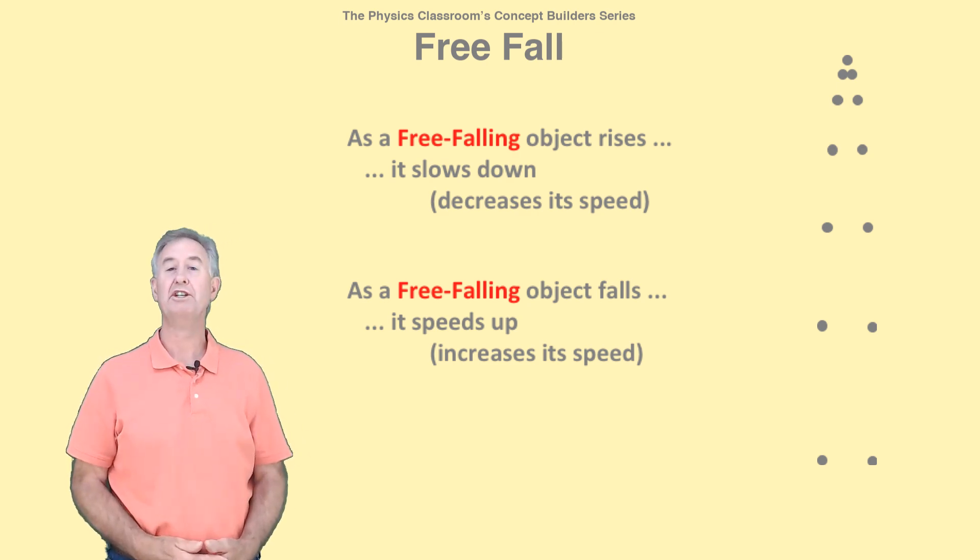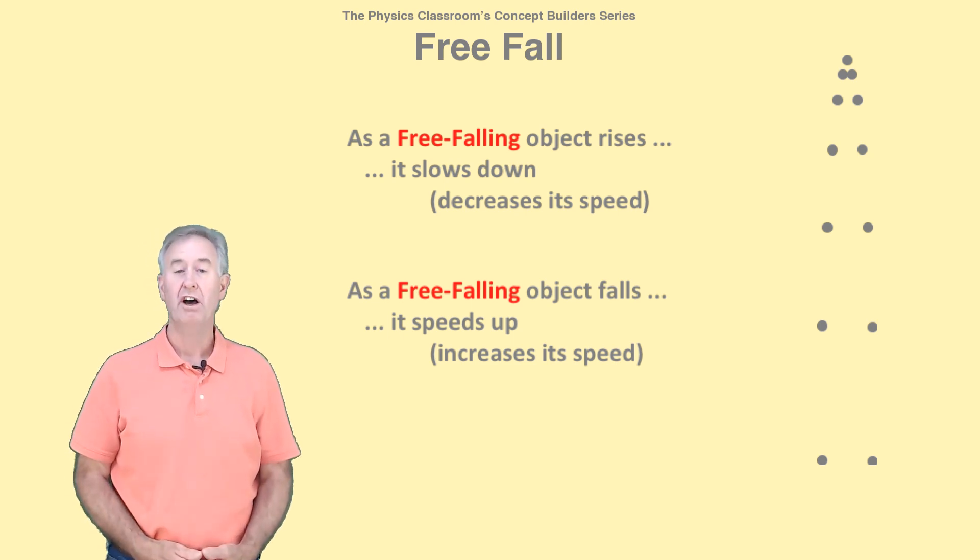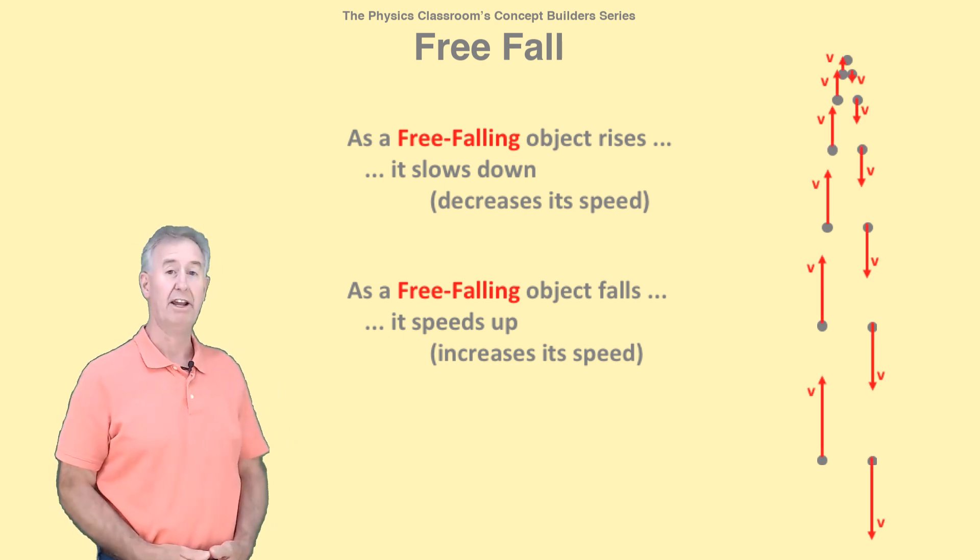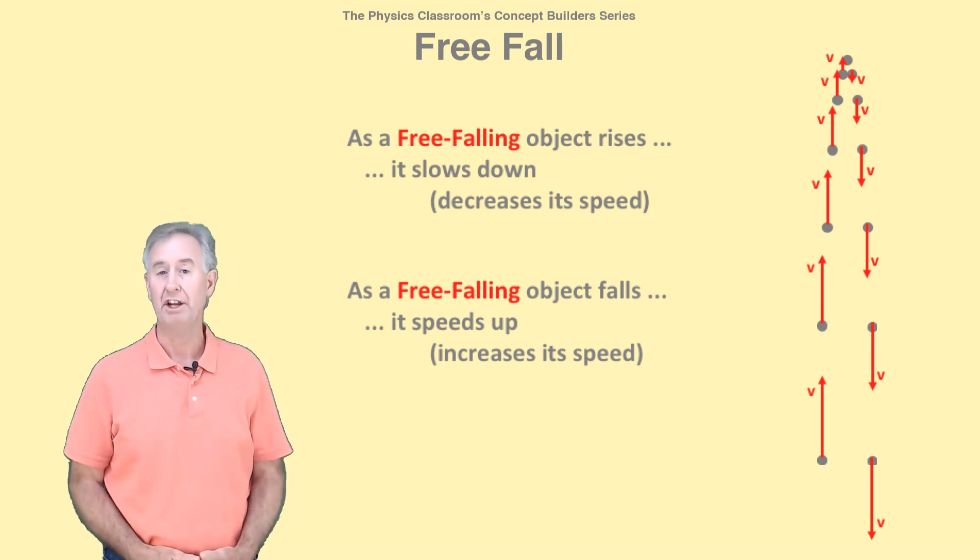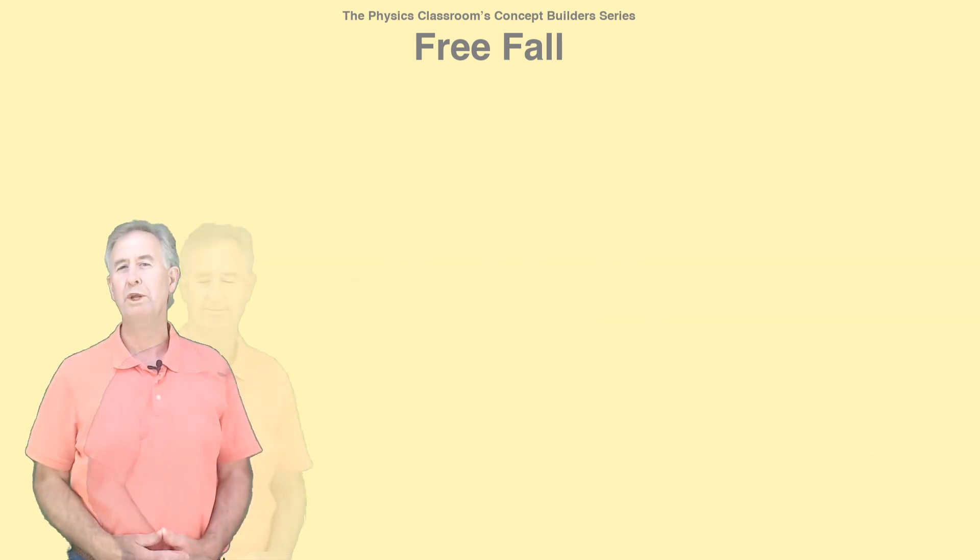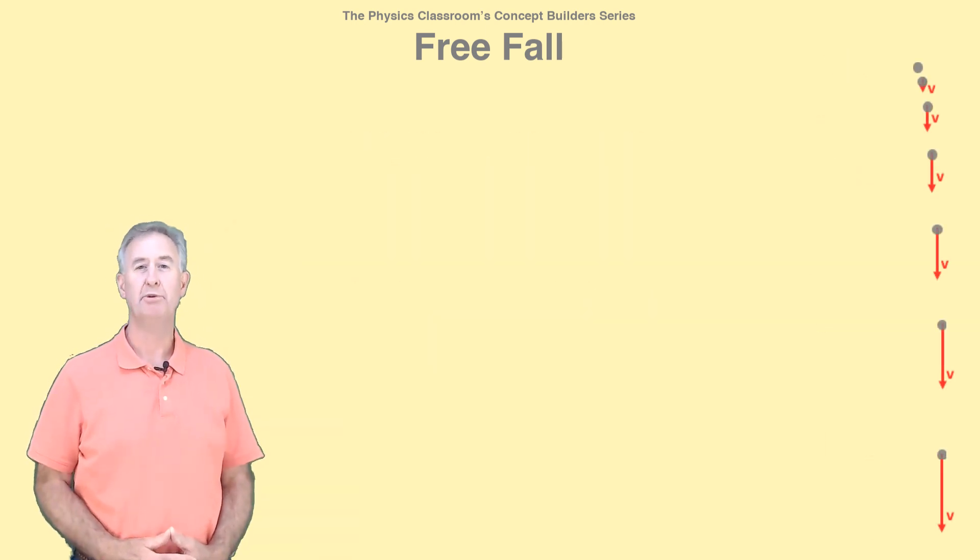Velocity is a vector. It is a speed with a direction. We can represent these ideas on a velocity vector diagram. Each arrow represents a velocity. The length of the arrow represents the speed, and the direction represents the direction of the velocity. When we express these ideas by numbers, we use a negative to indicate downwards. Don't think of negative as less than zero. Think of negative as a direction, downwards.